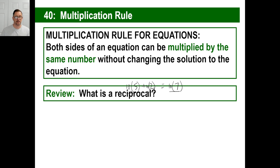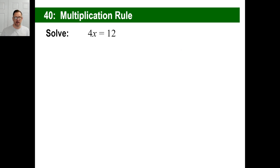What is the reciprocal again? What's the reciprocal of 3-sevenths? Seven-thirds. What's the reciprocal of 5? One-fifth — because 5 is five over one. Make sure you know that.